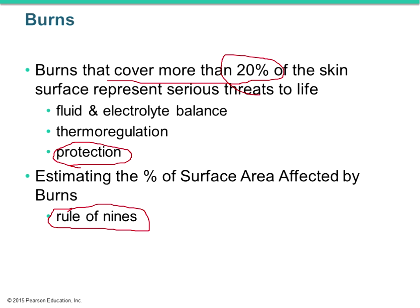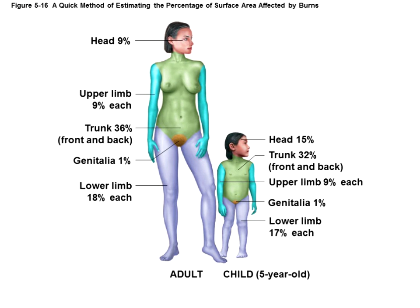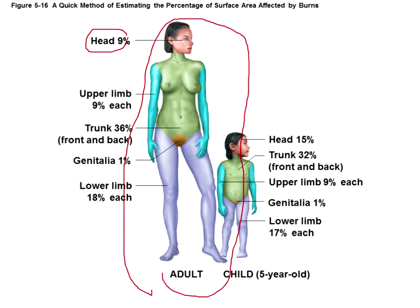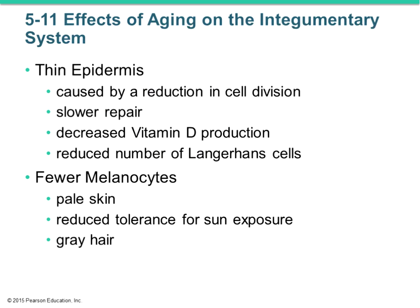There's a rule of nines that estimates the percentage of surface area impacted by a burn. In adults: the head is 9% of the skin surface, each arm is another 9%, the trunk front and back is 36%, and each leg is 18%. So if just one leg is badly burned, you're right at the threshold of serious danger. It's useful to understand how much of the integument is dedicated to each part of the body.